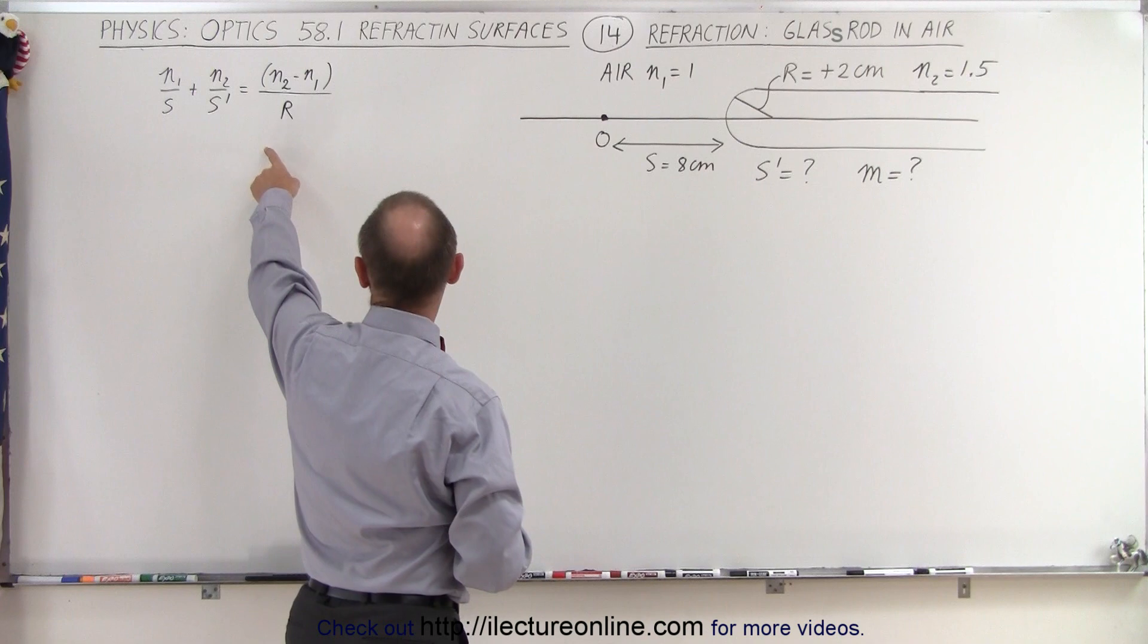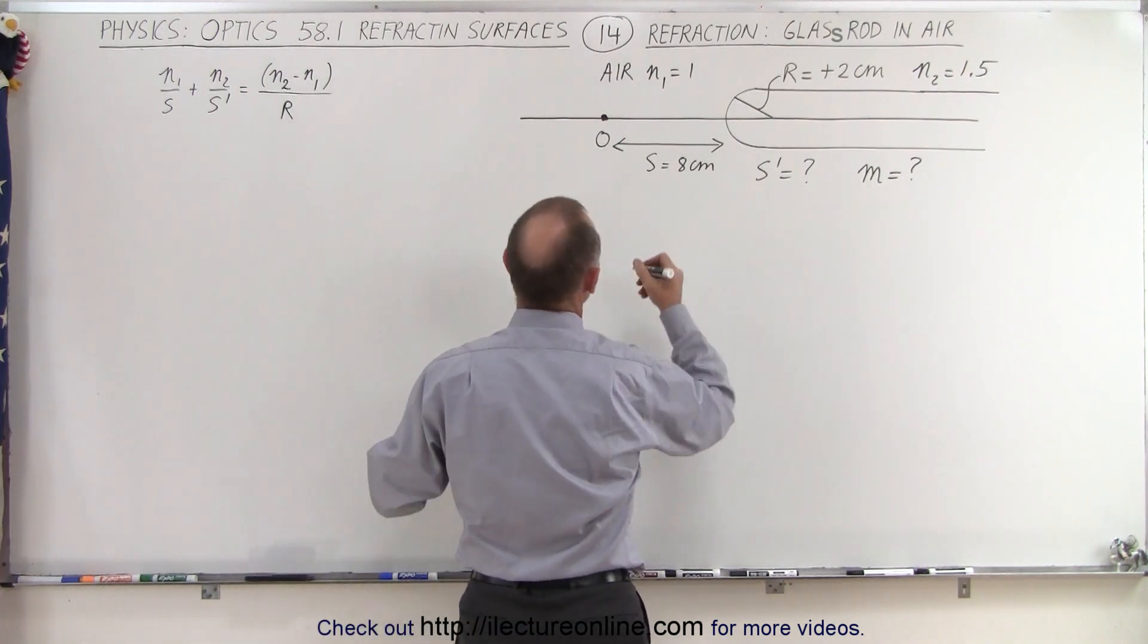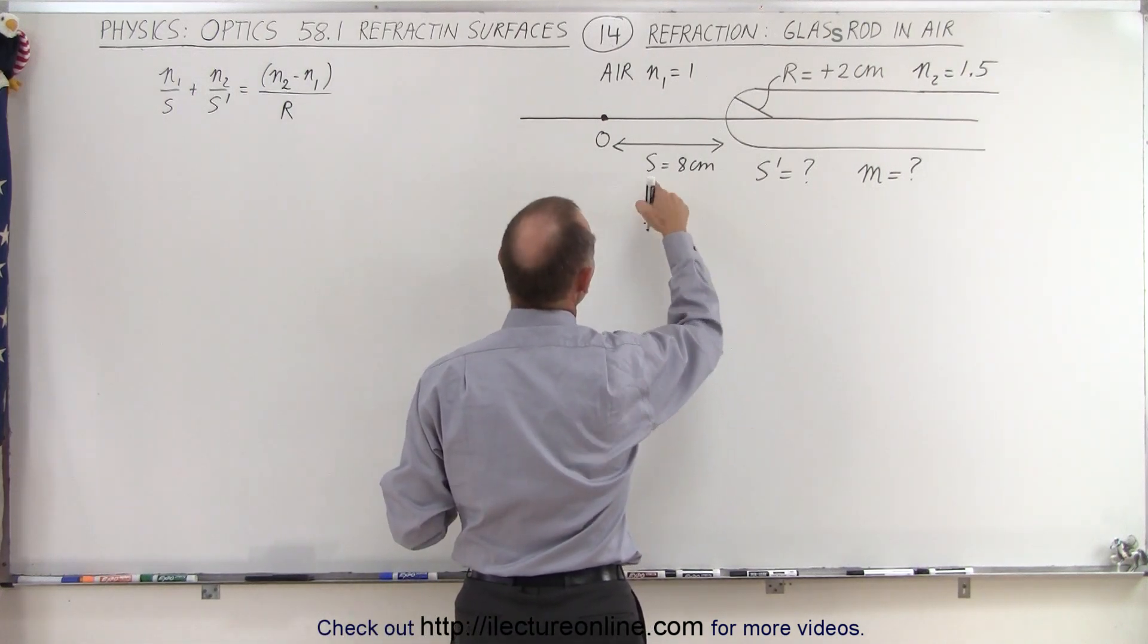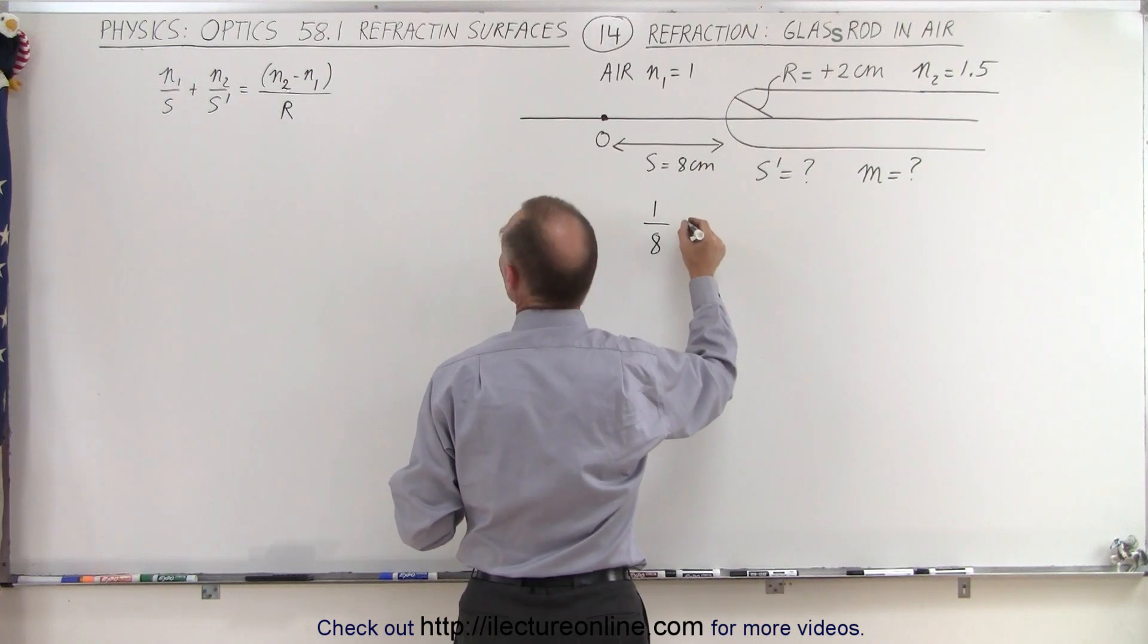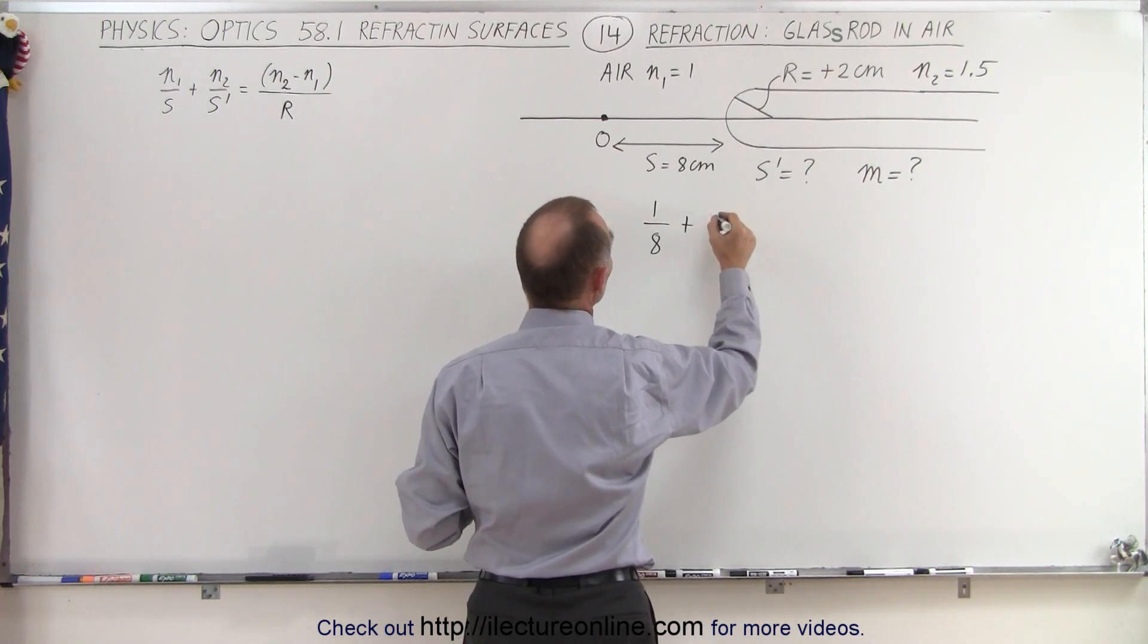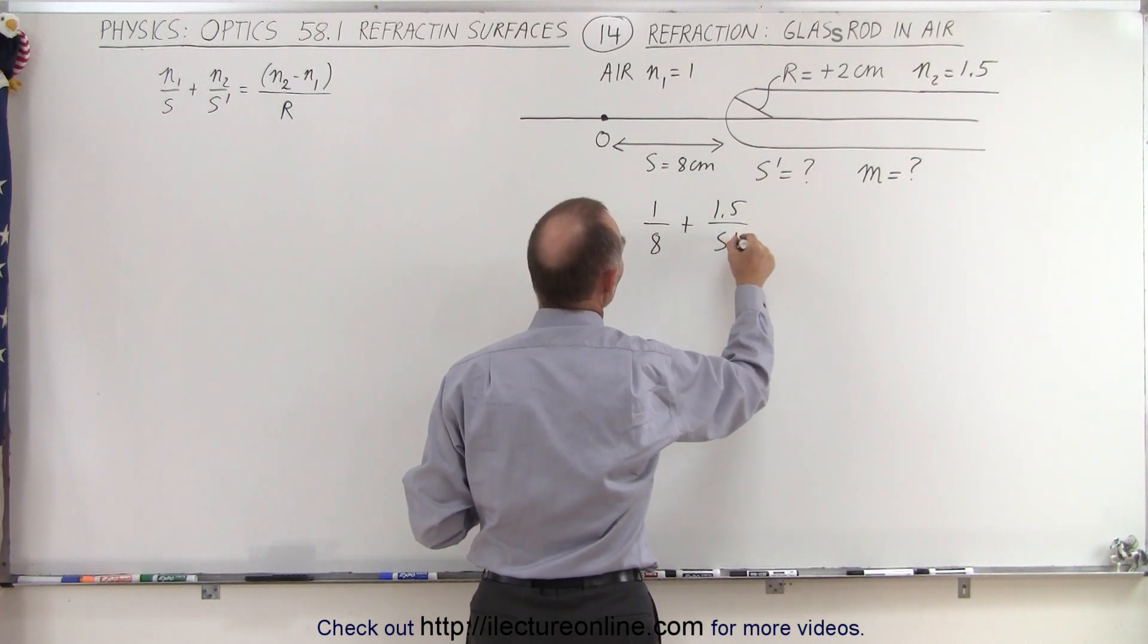So plug in everything into the equation. We have n1 over s. n1 is going to be 1 divided by s, which is 8, is going to be added to n2, which is 1.5 over s prime,